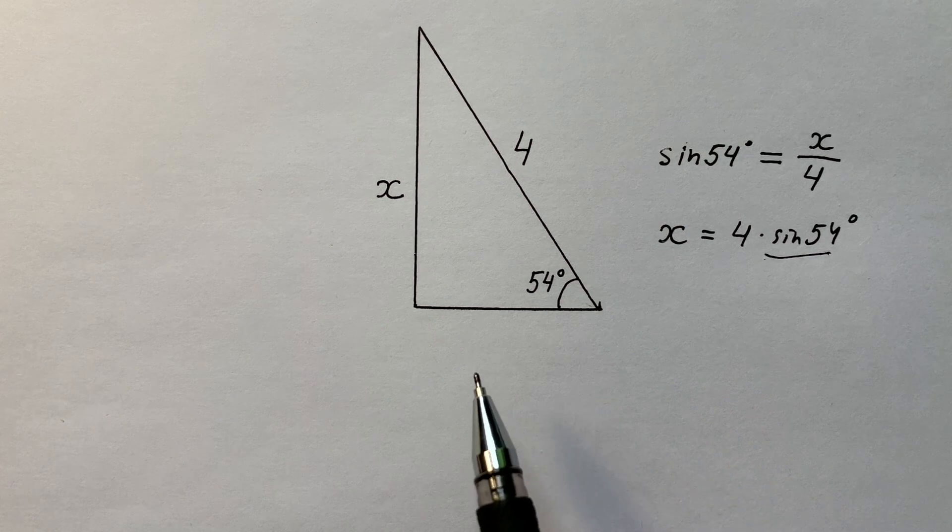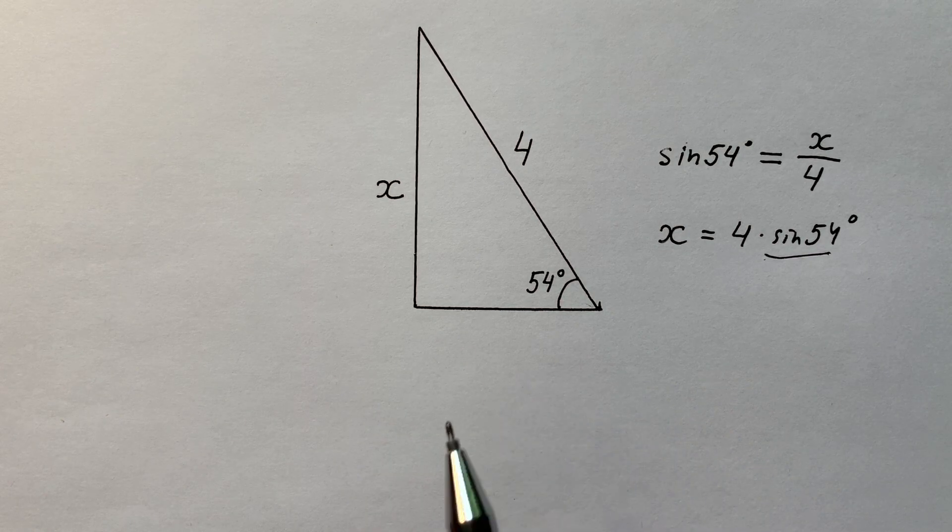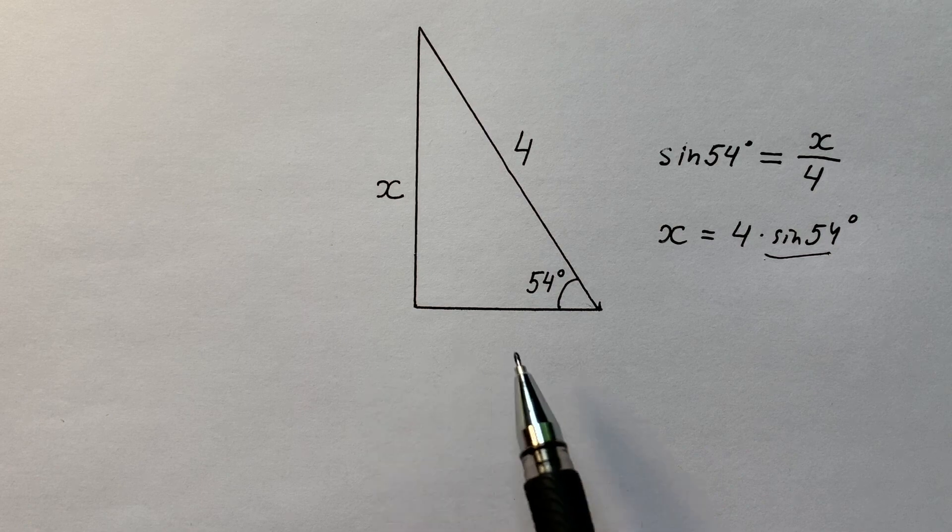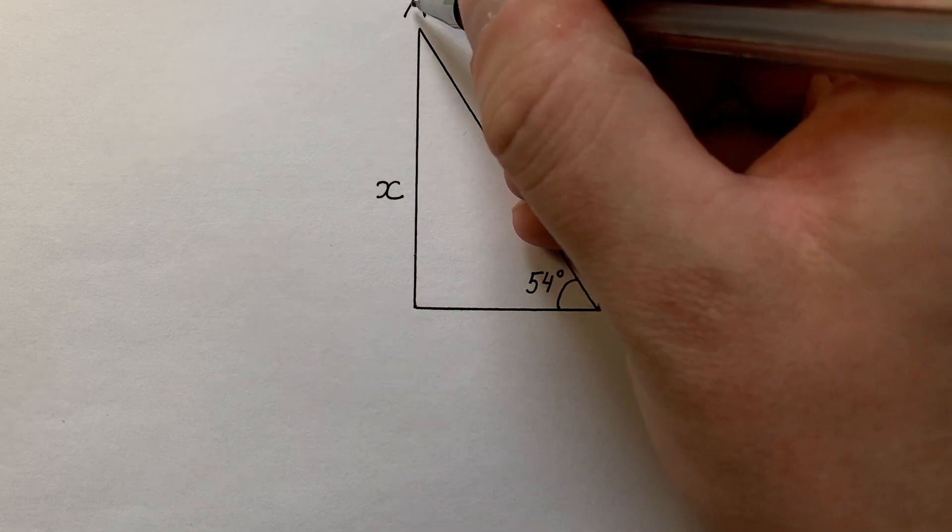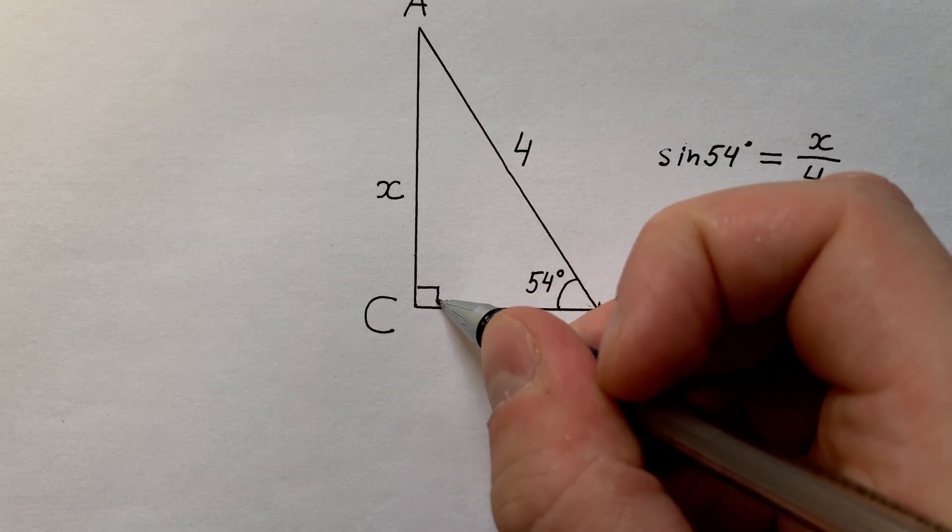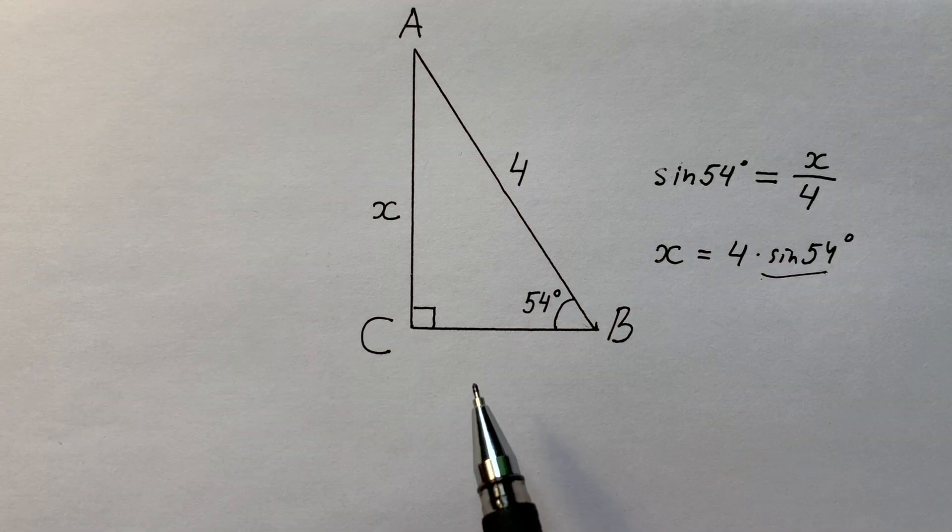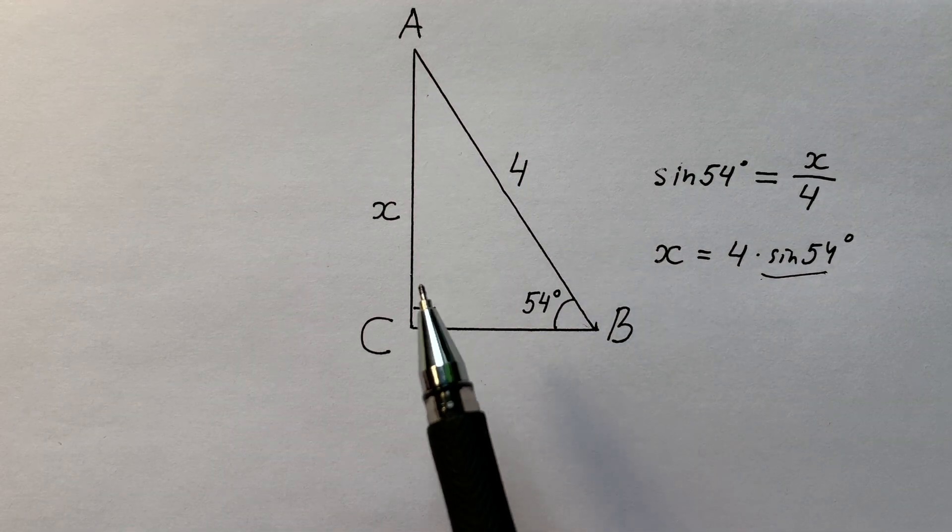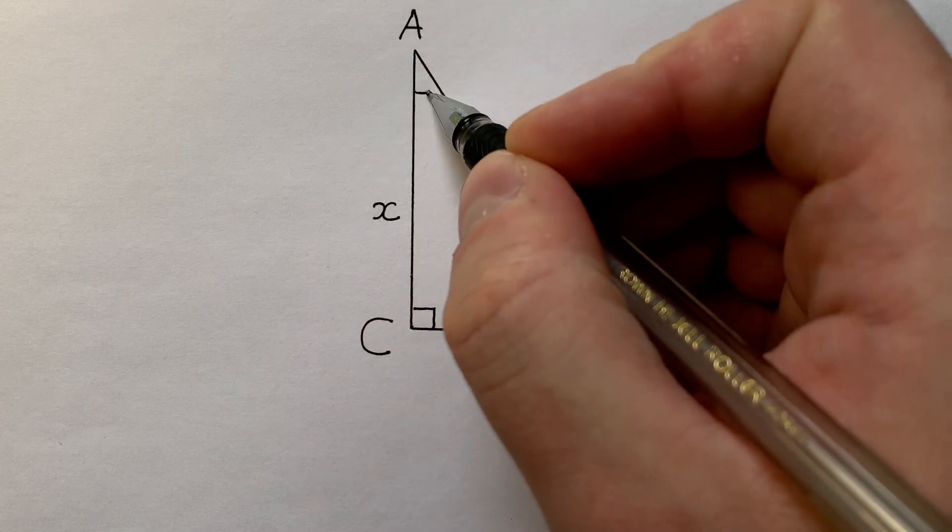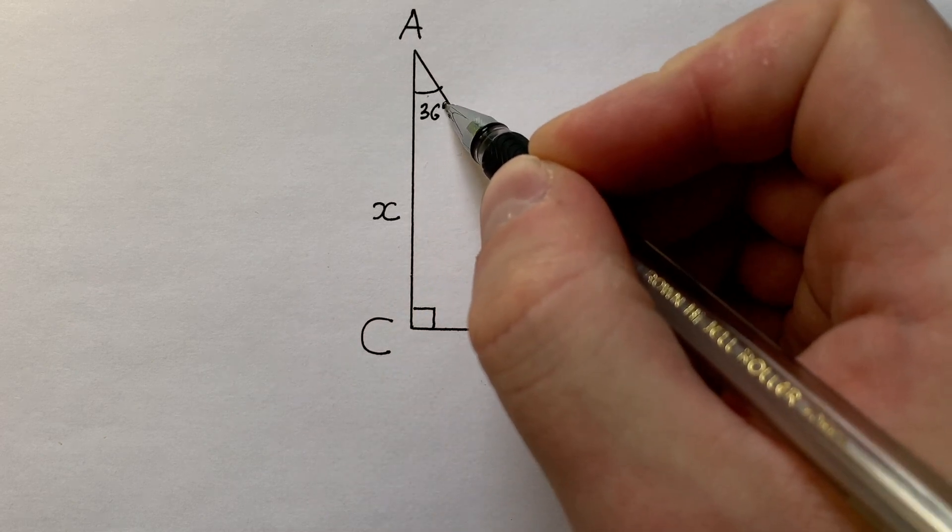And what usually geometers do? Of course, the first step, they should name angles of this triangle. Like A, B, C. C equals 90 degrees. And of course, we know that A equals 90 degrees minus 54 degrees, and it equals 36 degrees.